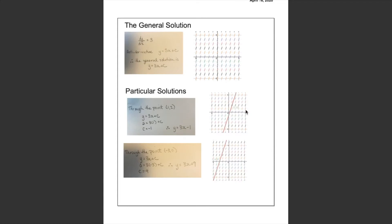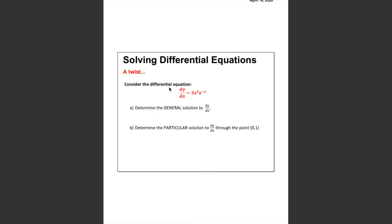In the last video I showed you how to find the solution to a differential equation when it was quite simple — for example, dy/dx equals 3, where you find the antiderivative and then find particular solutions through certain points. What we want to look at now is how to find solutions to differential equations when the antiderivative isn't quite so easy to see, and how to find particular solutions through certain points.